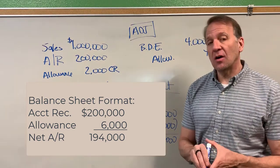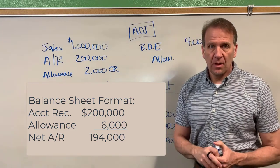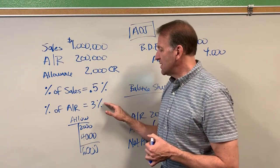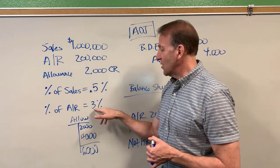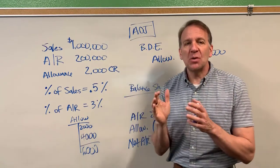So then our net accounts receivable using this method would be one hundred and ninety four thousand dollars. Now a lot of textbooks also show the aging of accounts receivable. Let me explain a little bit about the aging of accounts receivable. What we took was three percent of the two hundred thousand and in aging what they do is they take the accounts receivable and they age them.